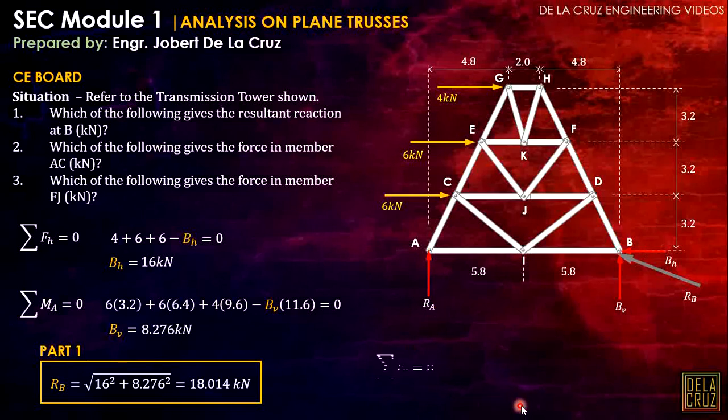Let's calculate the reaction at A because on the second question, we need to calculate member AC. So we need the reaction at A. That is just by summation of forces vertical. The vertical forces involved is RA and the vertical support at B. So we have RA plus RBV = 0. That is negative 8.276 kilonewtons. Our assumption here is correct, meaning the reaction at A will be going down, but we will not change the direction. We will be consistent on what we get. Gamitin natin yung signs.